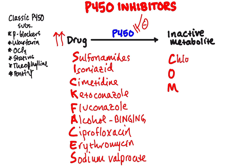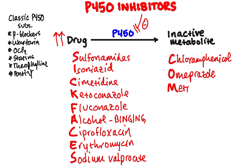C for chloramphenicol — you probably won't be tested on that because it's not given anymore in the U.S. due to side effects. O for omeprazole, another antacid used for gastritis and reflux — it's also over-the-counter, so expect that to possibly be tested. And then M for metronidazole, another common antibiotic. You may see it being given for something like bacterial vaginosis and so forth.